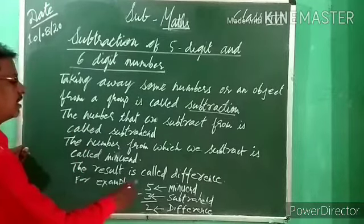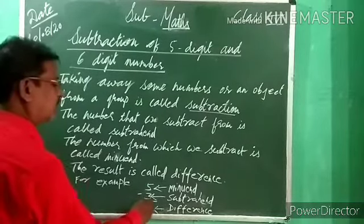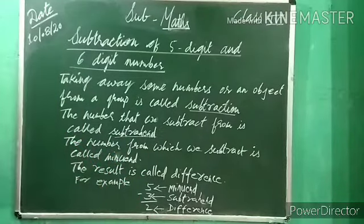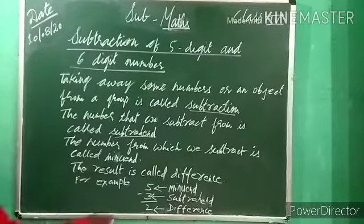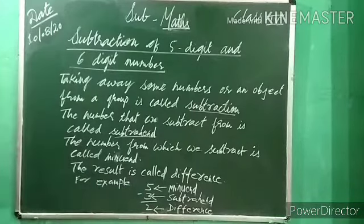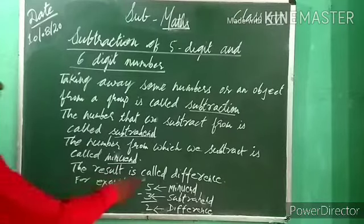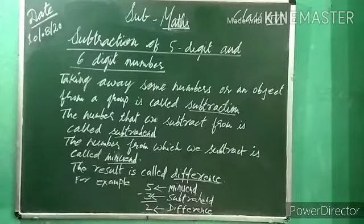For example, 5 minus 3. In subtraction, the bigger number is always written on top. So from 5, kitne nikhal rahe hain — 3. The number from which we subtract is called the minuend. The number we subtract is called the subtrahend. And the result of subtraction is called the difference. So in 5 minus 3: 5 is the minuend, 3 is the subtrahend, and 2 is the difference.